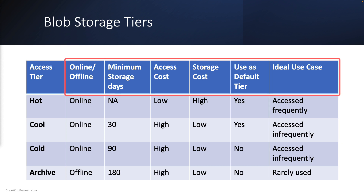These properties include whether the tier is online or offline, the minimum number of days you need to store data in it, the cost associated with access and storage, whether you can use that tier as a default tier while creating the service, and finally the applicable use cases.